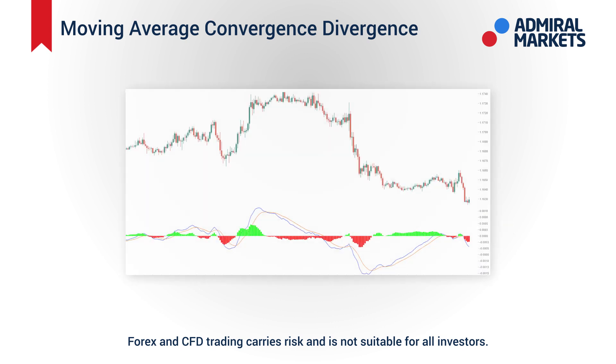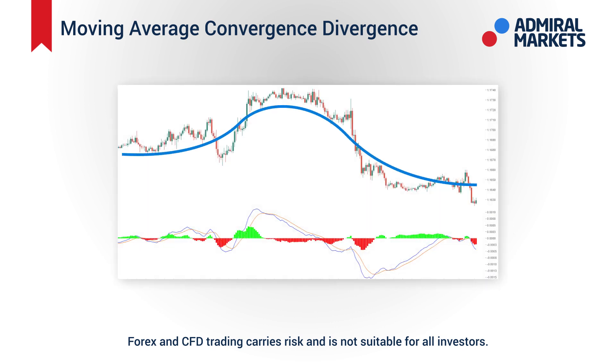Moving averages smooth out data series and make it easier to identify the directions of a trend. Since they involve past prices, they are called lagging or trend-following indicators.